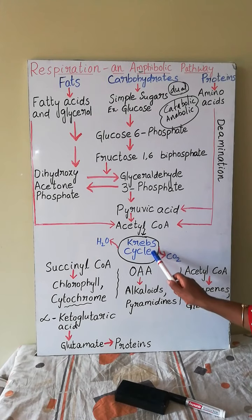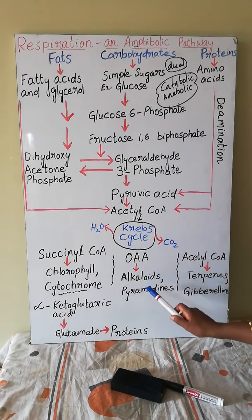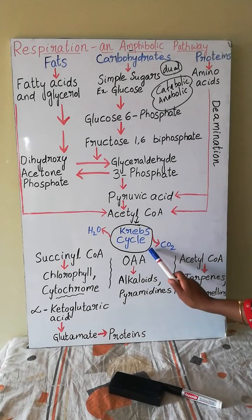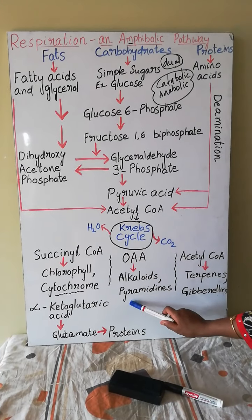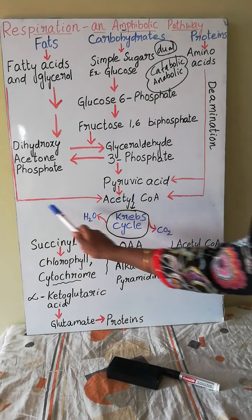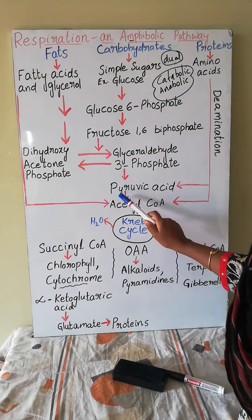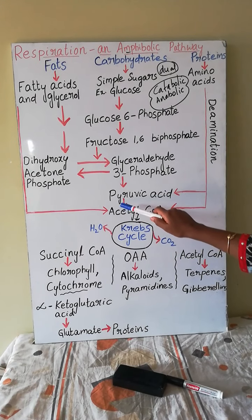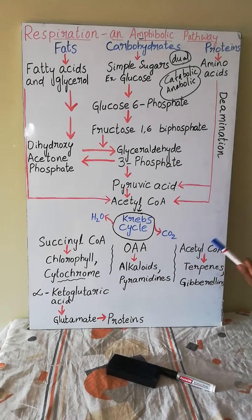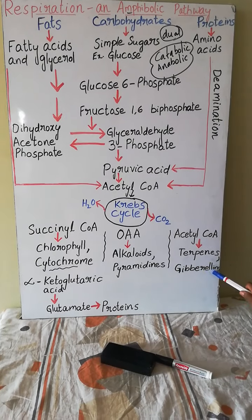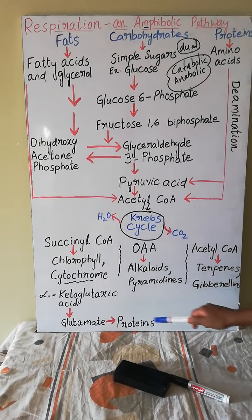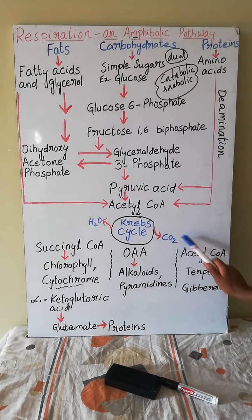Another intermediate from the Krebs cycle — oxaloacetic acid — leads to the formation of alkaloids as well as pyrimidines. Acetyl-CoA can also be withdrawn for the formation of fatty acids when required, so it both enters the Krebs cycle and can be withdrawn for fatty acid synthesis. Respiration is also involved in the formation of terpenes as well as gibberellins, which are plant growth hormones. All these intermediates formed in the Krebs cycle are involved in anabolic processes.